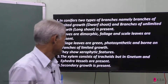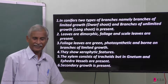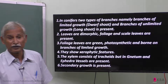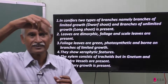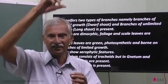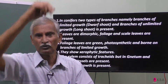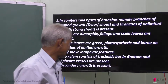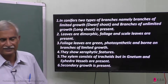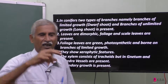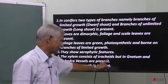The xylem consists of tracheids. Tracheids are elongated cells, tapered at both ends — that is, tubular cells. Vessels are not present here; vessels are absent. That is why the cells are tracheids.